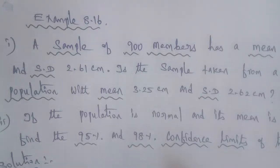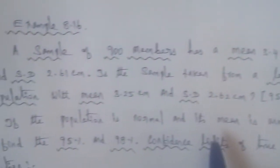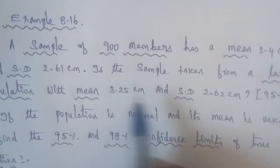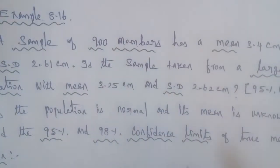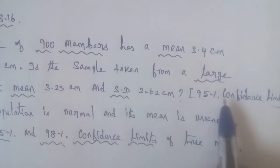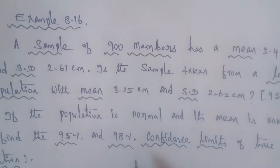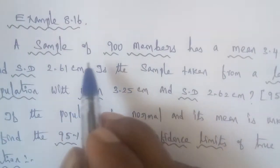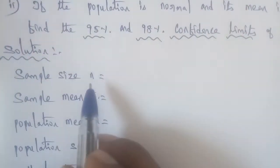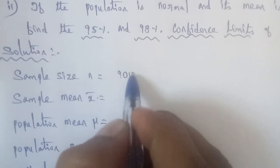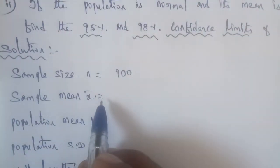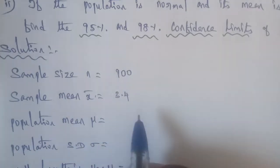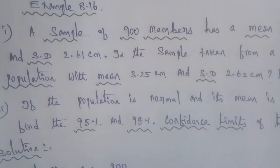Example 8.16. A sample of 900 members has a mean of 3.4 cm and standard deviation of 2.61 cm. The sample is taken from a large population with mean 3.25 cm and standard deviation 2.62 cm. Given: sample size n is equal to 900, sample mean x-bar is equal to 3.4 cm, and sample standard deviation is 2.61 cm.